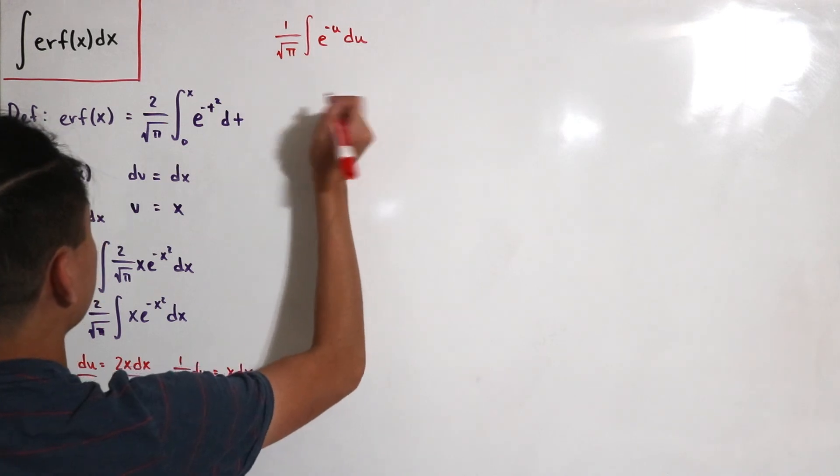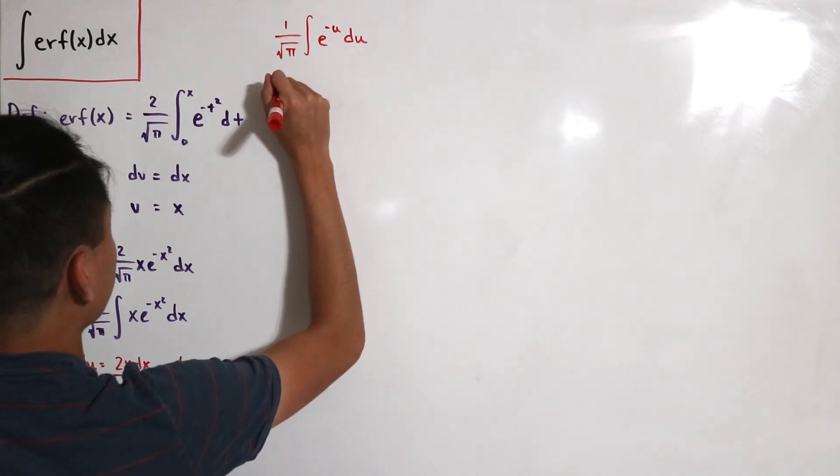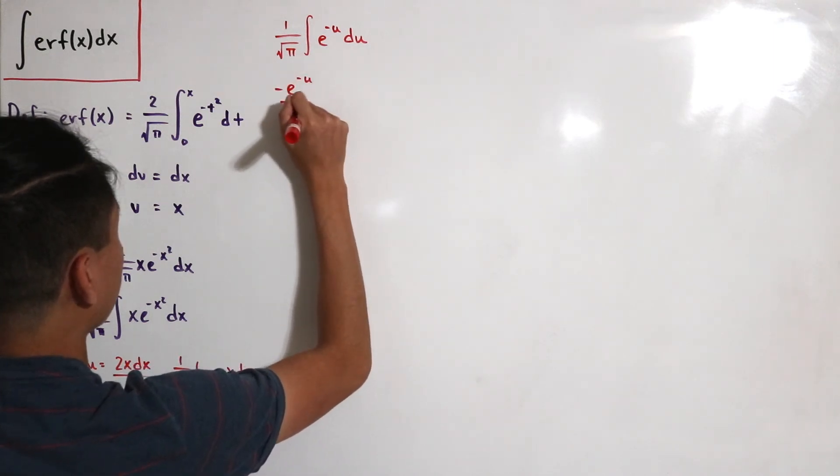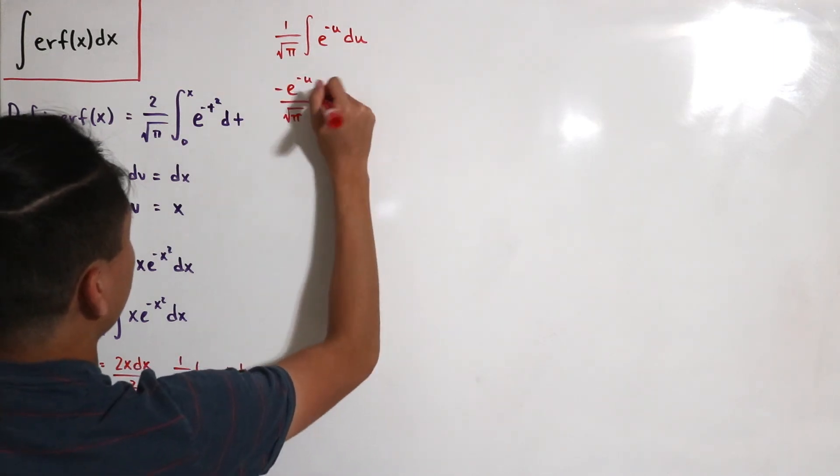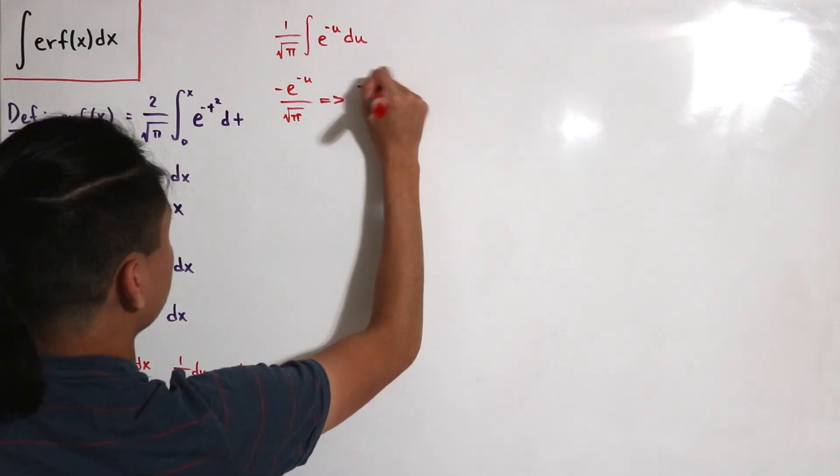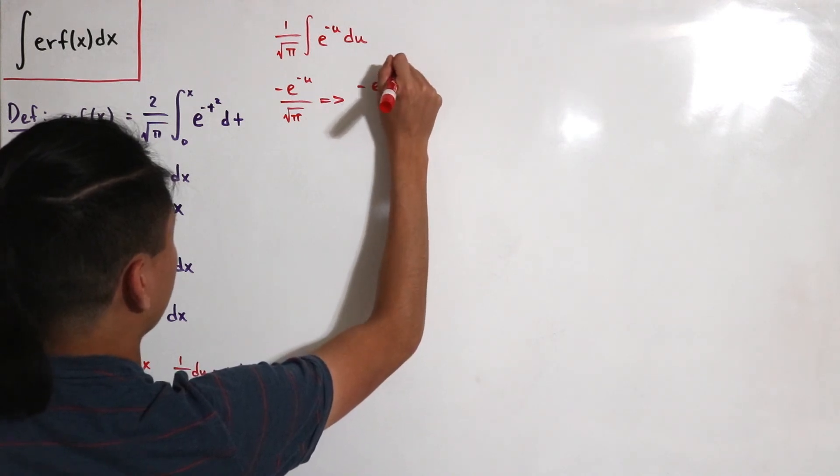So we have negative e to the negative u over square root of π. All right, and then just plug in the u back in so we have negative e to the negative x square and then divided by square root of π.